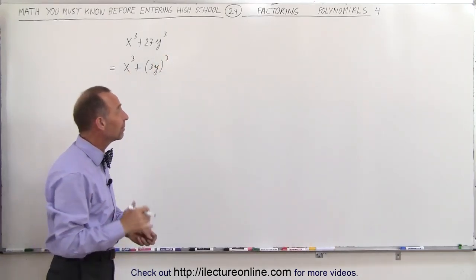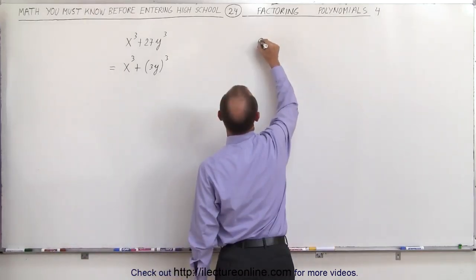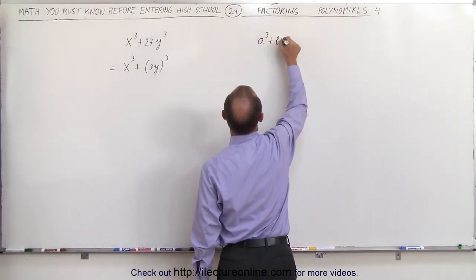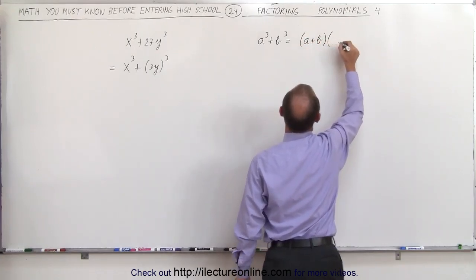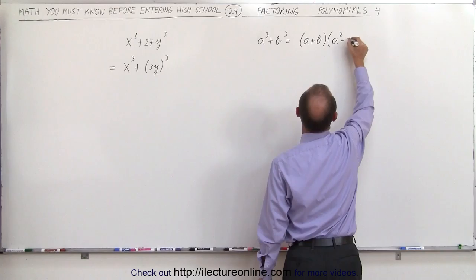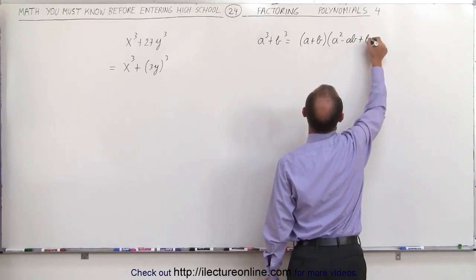And whenever we have the sum of cubes, it can be factored as follows: a cubed plus b cubed. This can be written as the quantity a plus b times a squared minus ab plus b squared.